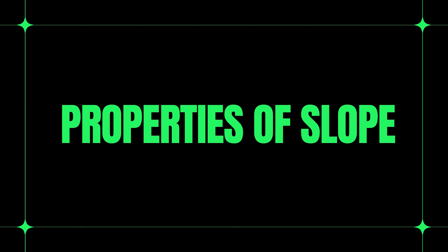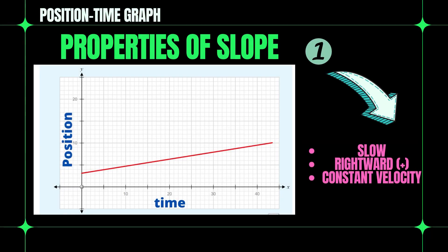I will be presenting properties of slope in four different scenarios. Number one: slow, rightward, that is positive, and it has a constant velocity.